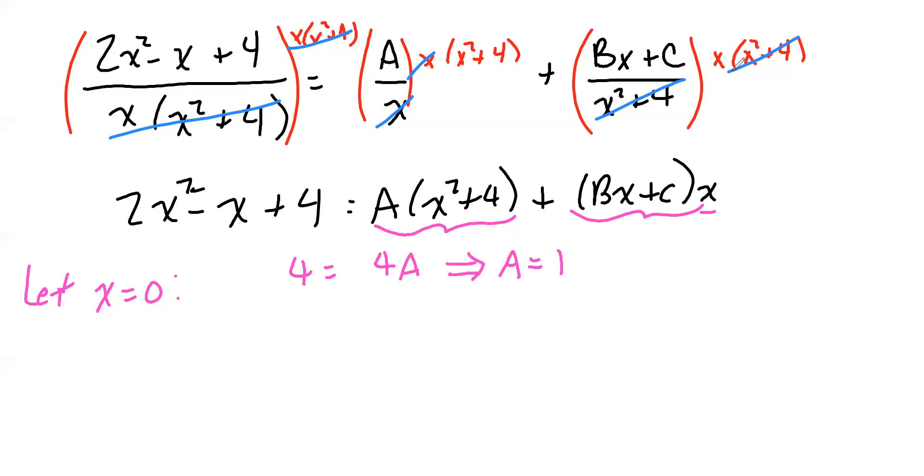So I'll get 4 equals 4A, and this implies A is equal to 1. But we run out of good x's that will make things disappear. So now we just got to start picking some other x's and see what we can make out of this. There's no need to get crazy.